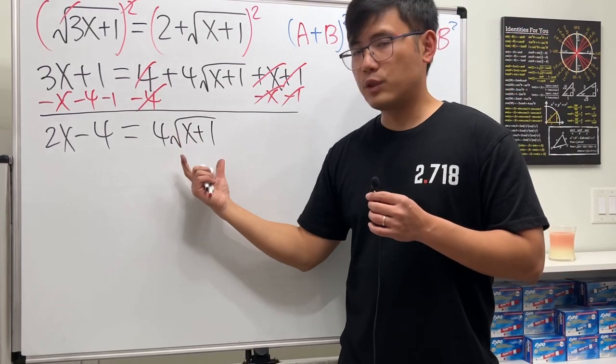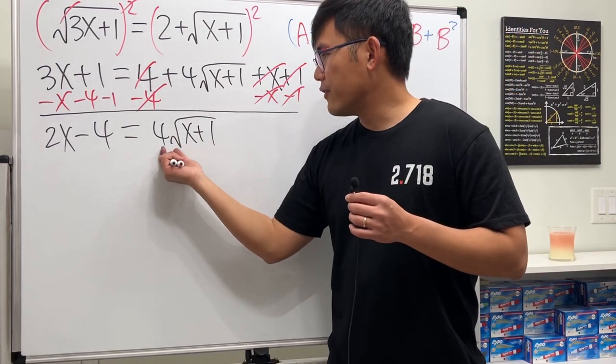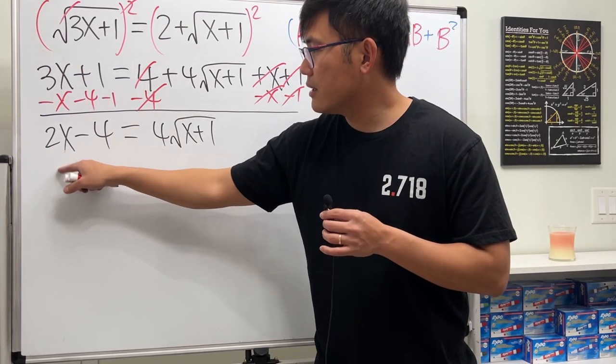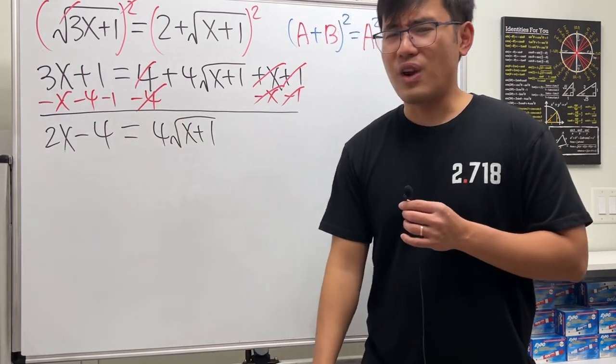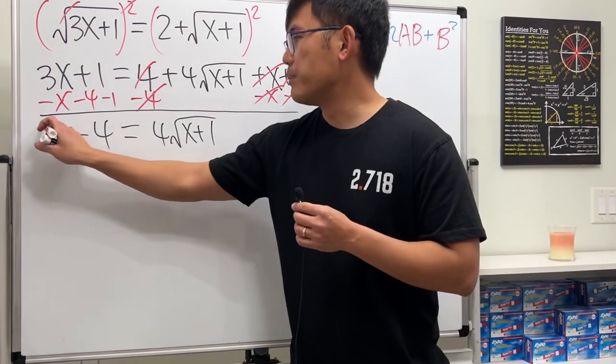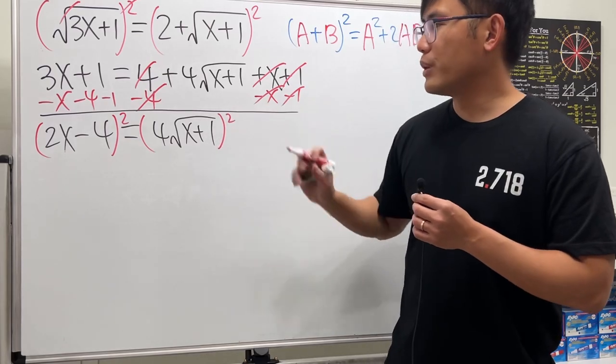Okay, we have 4 times this square root. Maybe we should divide the 4 on both sides, but not really. Because if I divide the 2x by 4, we'll end up with a fraction, so maybe not preferred. So let's just look at this and square both sides. And do it carefully.